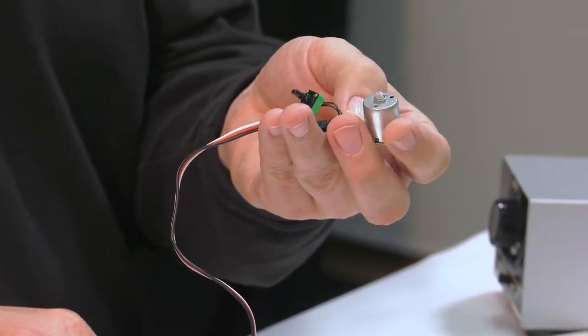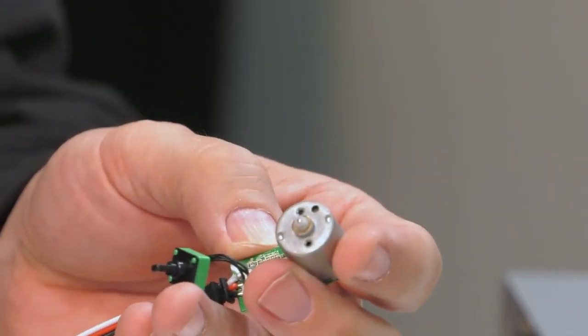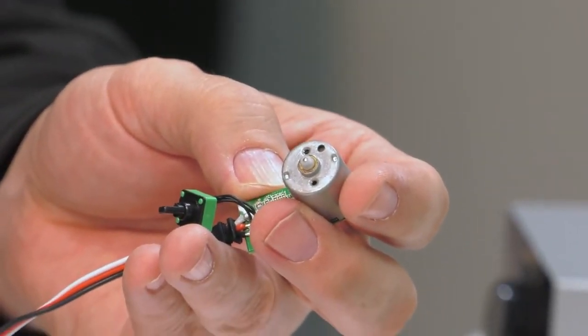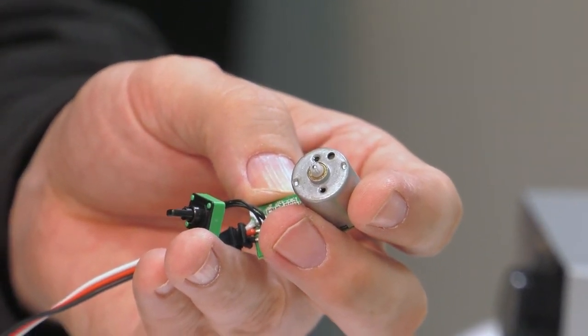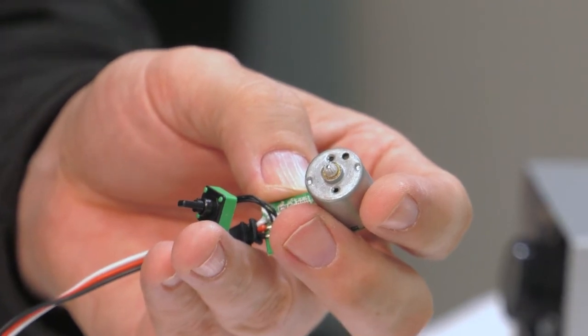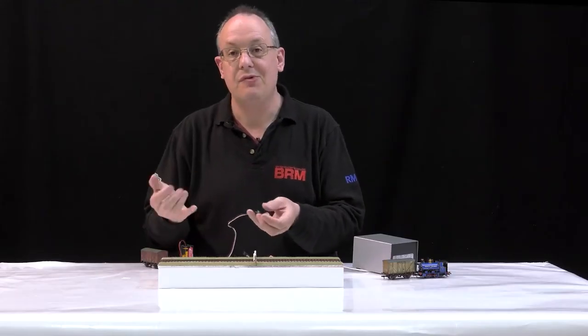There's the motor running, and using my servo tester I can reverse it and change the speed. You probably can't see that, but trust me—that whining noise is the motor running. And I can slow it down and reverse it using the tester. So there's potential there, for example, for crane animations.